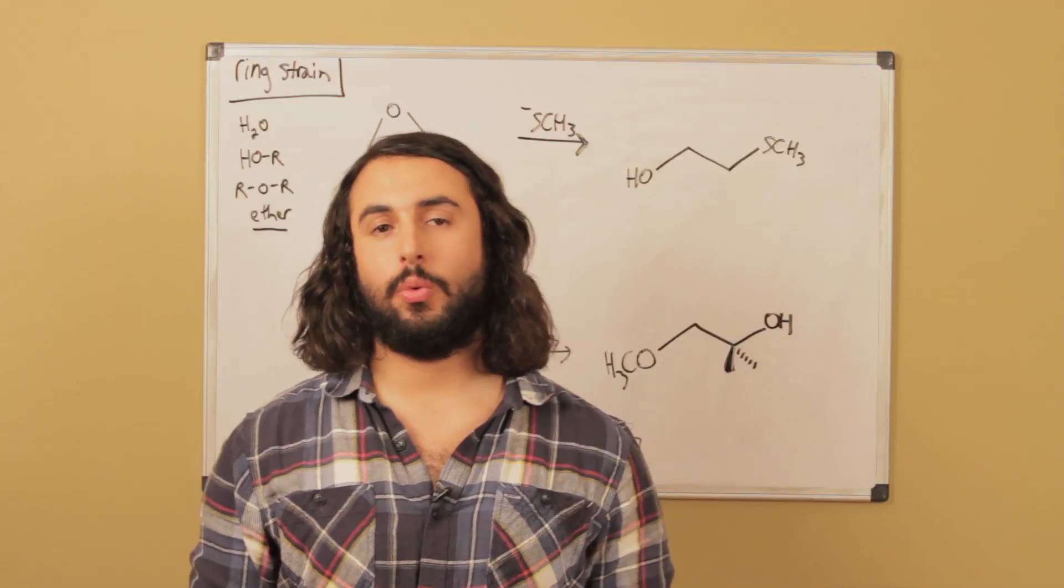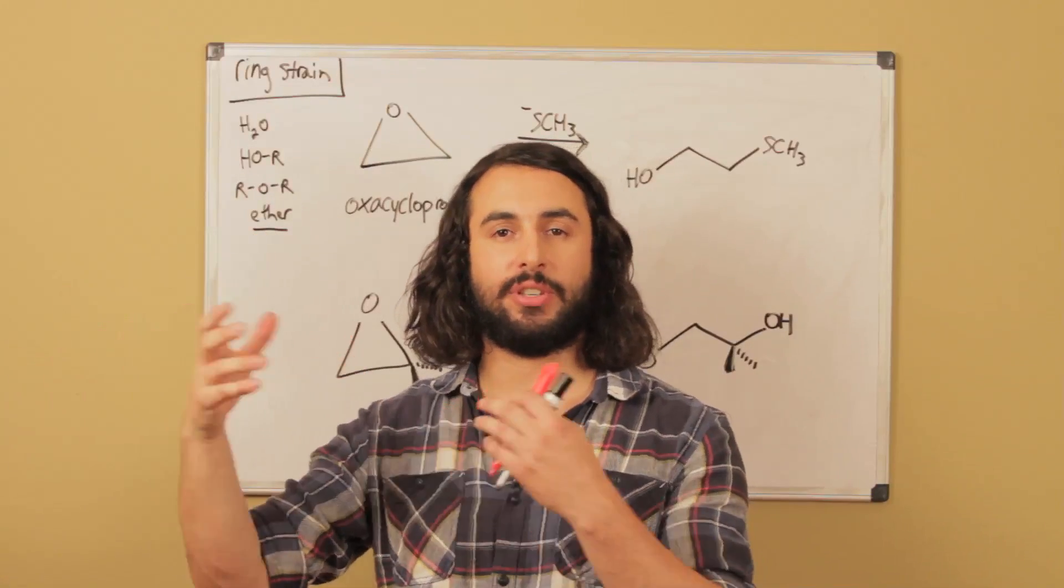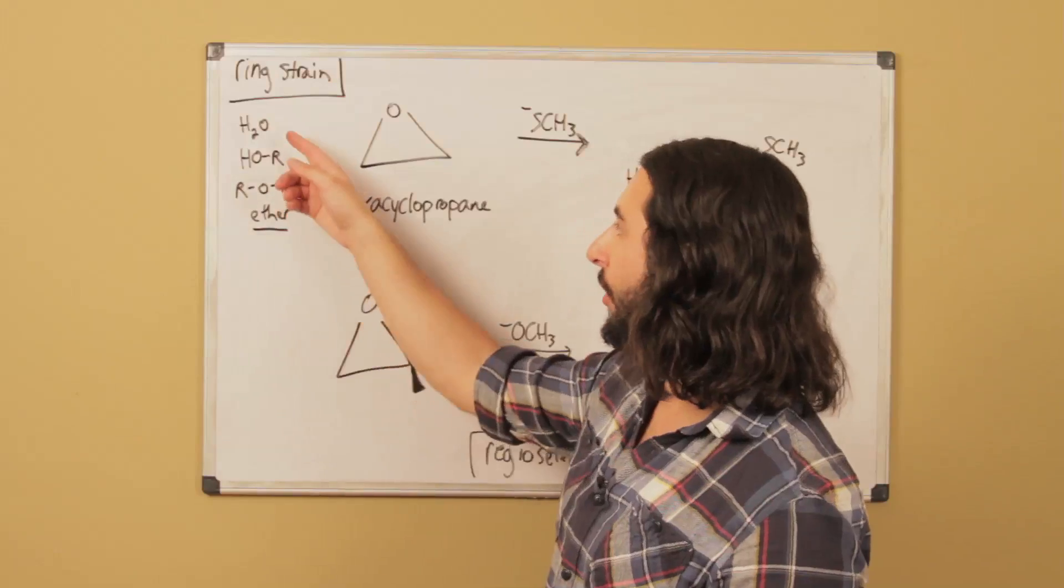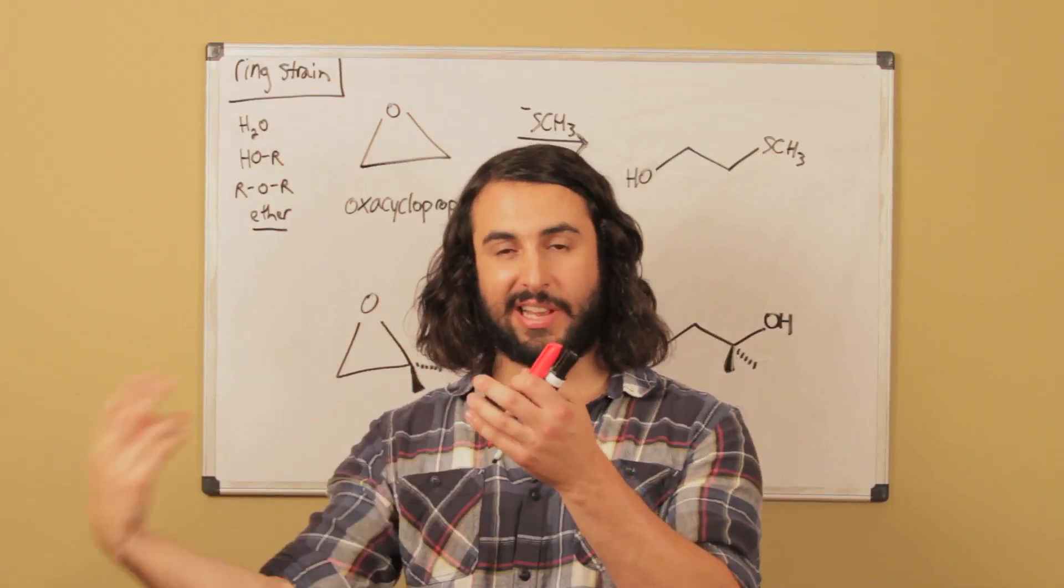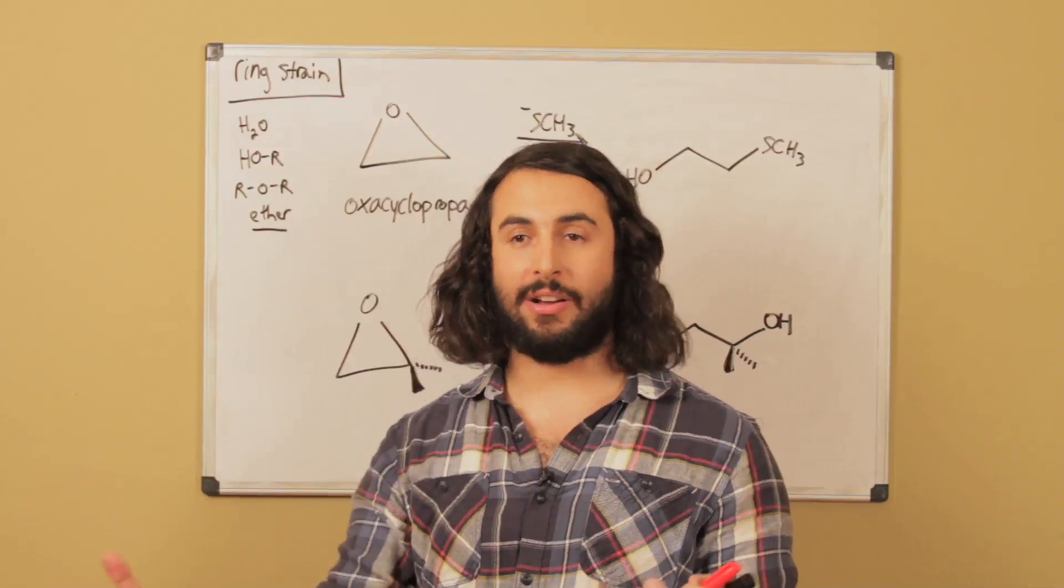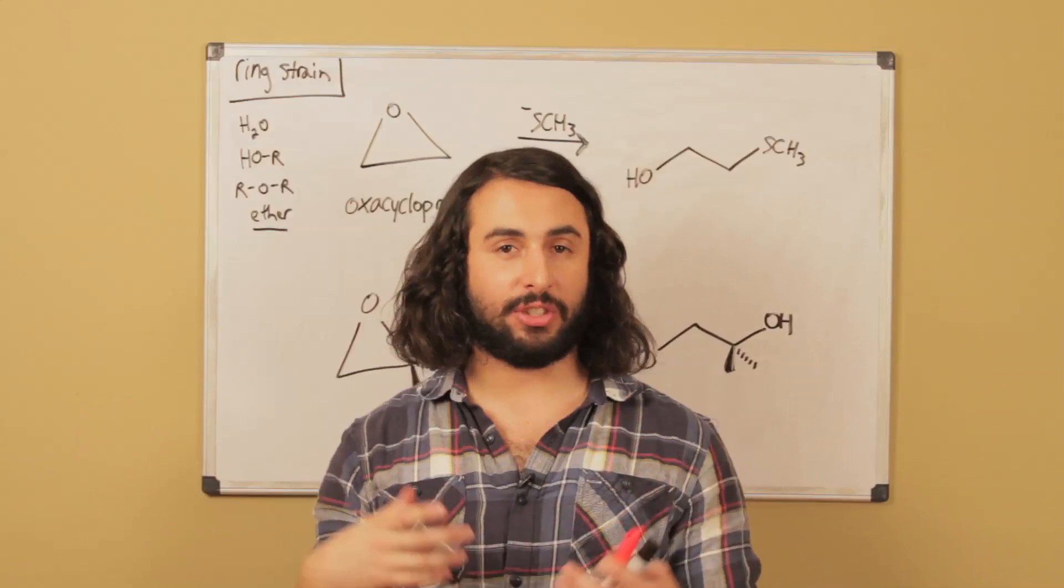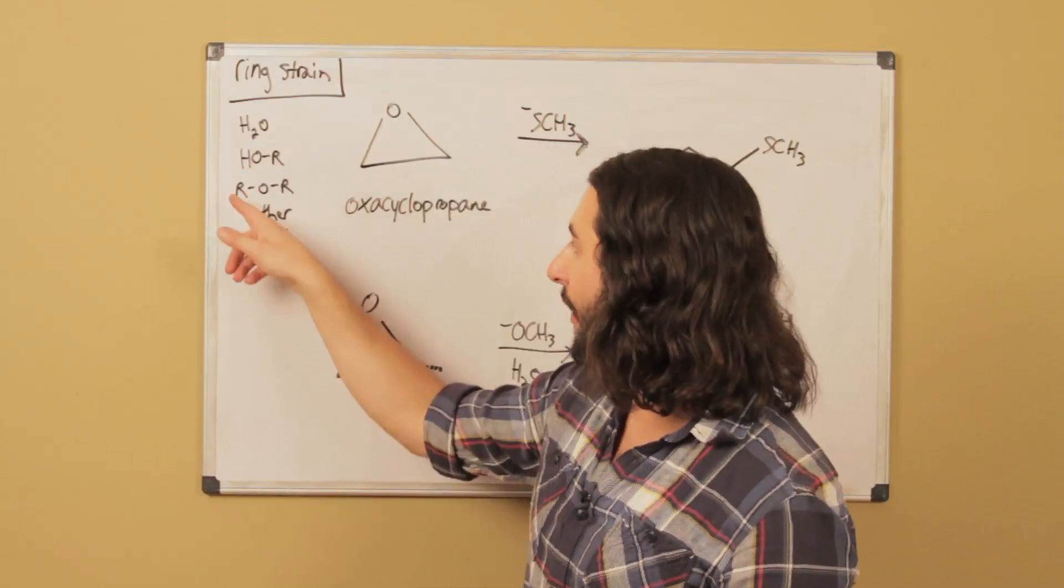We know a little bit about the functional groups that are generated when oxygen is attached to hydrogens or alkyl groups. H2O is water, an oxygen attached to two hydrogens. If we replace one hydrogen with alkyl we get an alcohol, and if we replace the other hydrogen with another alkyl group, that's ROR.